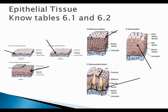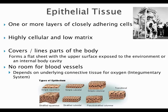As we get into epithelial tissues, you should know tables 6.1 and 6.2, which detail basic shapes and organization. Epithelial tissue is described as being highly cellular, or having a high cell-to-matrix ratio. Think of a telephone booth as the matrix and the people as cells — there's a little bit of matrix, but mostly it's cells shoved in there. Epithelial tissue often covers or lines most of the body, tightly packed together.